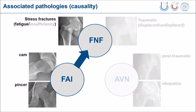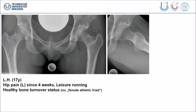I will show you one example which is from my point of view very typical. This is a 17-year-old female with, as you see here, an incomplete stress fracture. She has had pain for four weeks, is doing some light running, but is otherwise healthy. No female athletic triad, absolutely normal bone turnover.